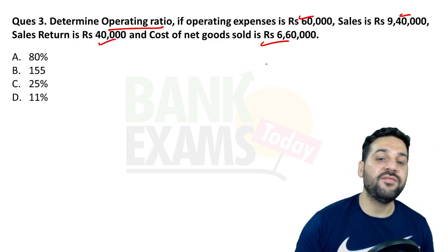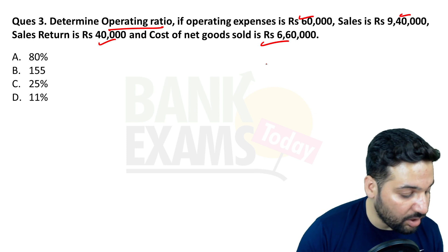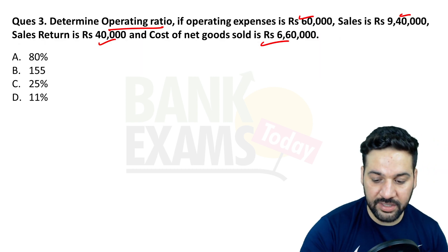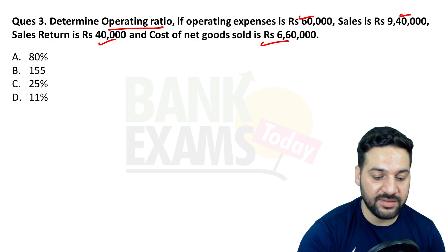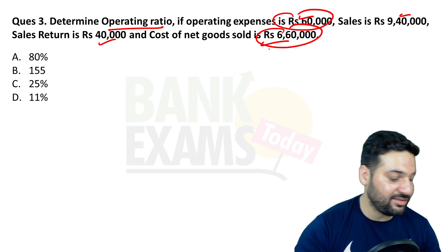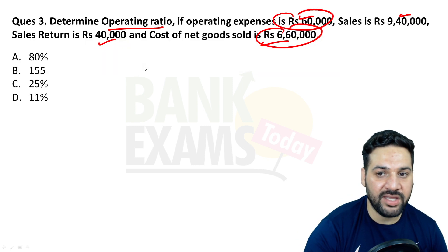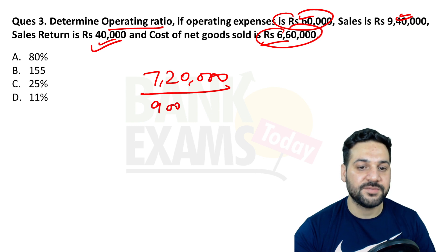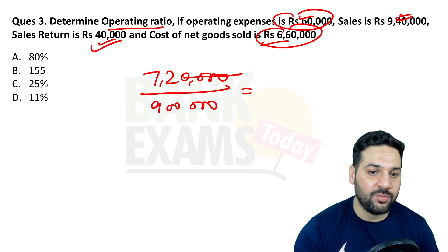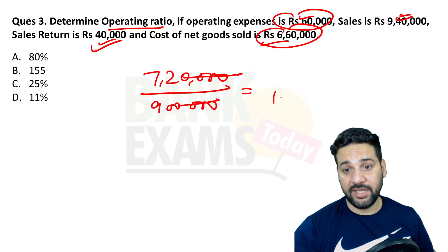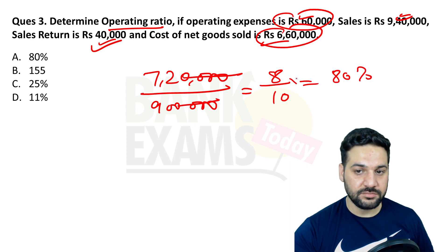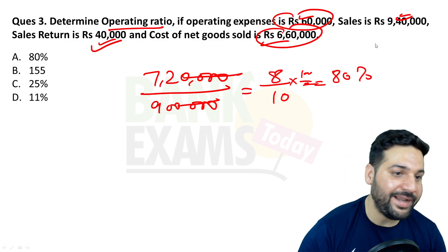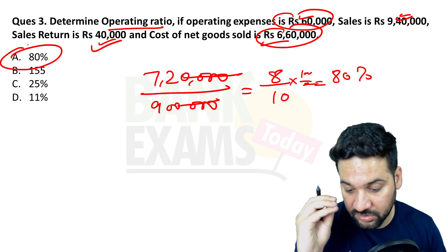The formula for operating ratio is: operating expenses plus cost of goods sold, divided by net sales. Do not confuse operating ratio with operating profit ratio. Operating expenses is 60,000, cost of goods sold is 6 lakh 60,000, so total is 7 lakh 20,000. Net sales is 9 lakh 40,000 minus 40,000 = 9 lakhs. So operating ratio is 7,20,000 divided by 9,00,000 = 80%. Multiply by 100, so 80% is the correct answer.